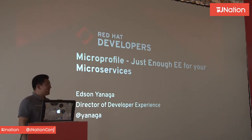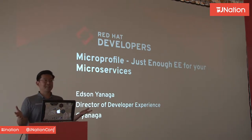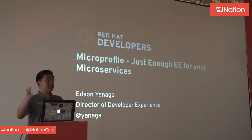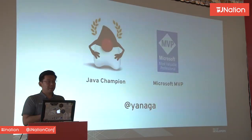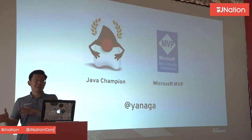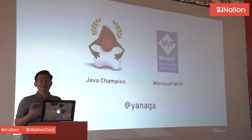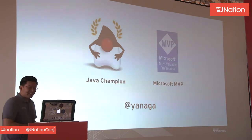My name is Edson Yanaga. I'm a Director of Developer Experience at Red Hat. My Twitter is @yanaga. I talk a lot about Java, DevOps, microservices, software architecture, and anything else. I also happen to be a Java Champion and a Microsoft MVP, and I work for Red Hat, which I believe is a very cool combination.